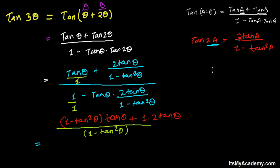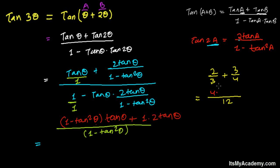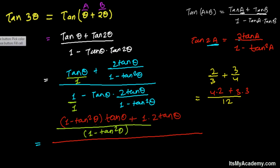If you're confused, here's a quick example. It's like 2 over 3 plus 3 over 4. We take the LCM of 3 and 4 and get 12. Then 3 divides 12 to give 4, which multiplies the numerator; and 4 divides 12 to give 3, which multiplies the other numerator. That's the same process being applied here.